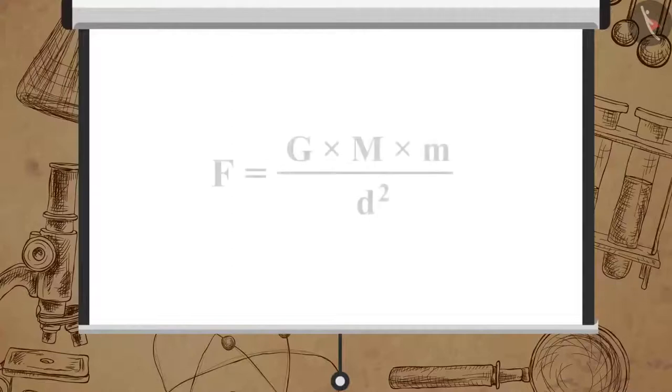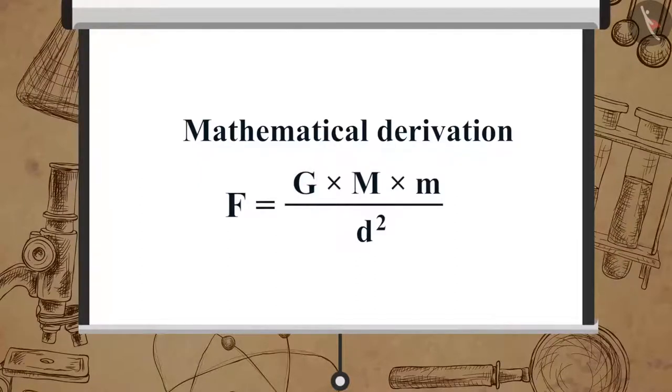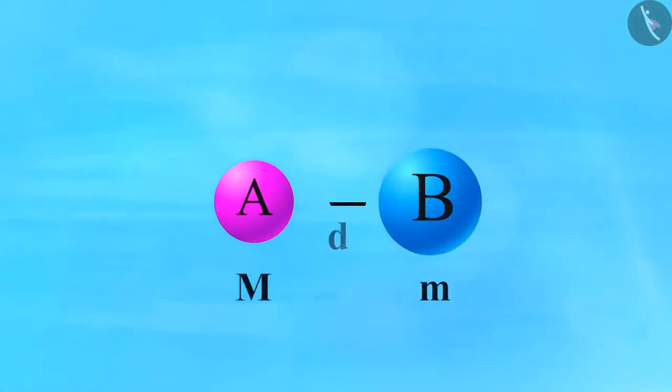Mathematically, it is written as F is equal to G multiplied by M multiplied by m upon d square. Now, let us see how we can derive the mathematical representation of universal law of gravitation. Let us consider two objects A and B with masses M and m respectively and the distance between them is d. Let the force of attraction between A and B be F.